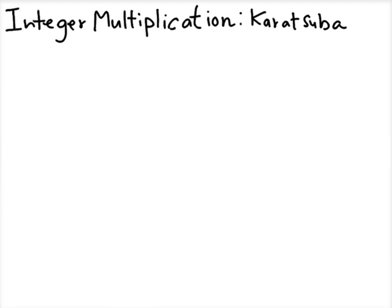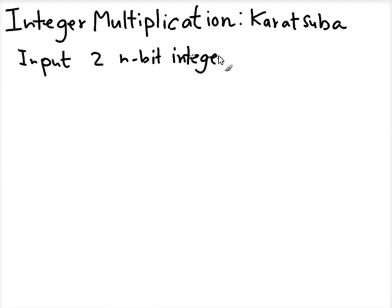In this clip we'll talk about Karatsuba, the integer multiplication algorithm. It is a divide and conquer algorithm. The idea is quite similar to Strassen's matrix multiplication. So let's think about integer multiplication — for the input we are given two n-bit integers and we want to multiply them. Think of n as something big, not just 32 or 64, but something like a thousand or ten thousand bits — this is something you want to do for cryptography.